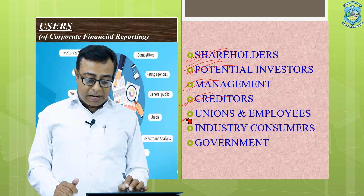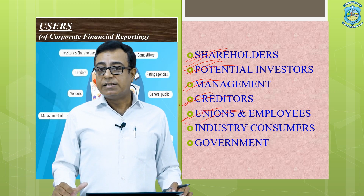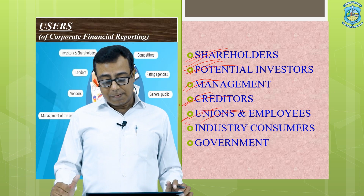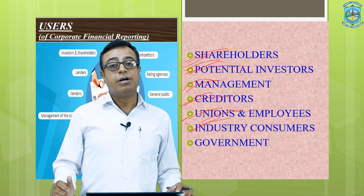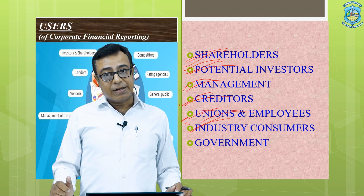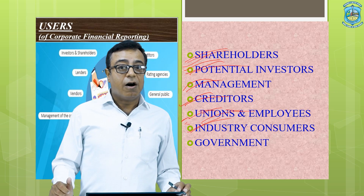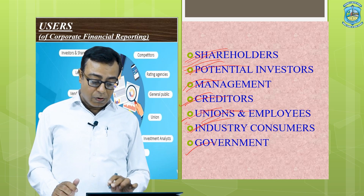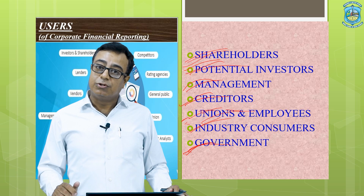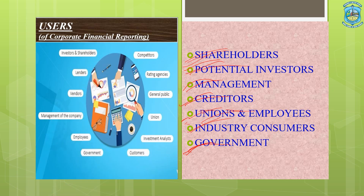Unions and employees are also interested in this reporting because they get all details regarding their wages, salaries, and other remuneration distributed by the company. Industry consumers can get information about the company's products, prices, costs, and profit margins. Finally, government and government agencies look at the reporting to know the tax collected and paid by the company and the legal formalities followed — so government is also interested in corporate financial reporting.